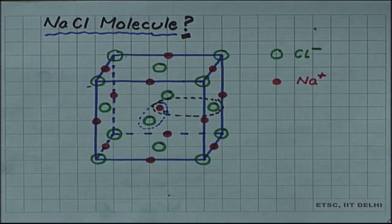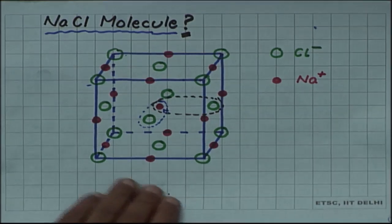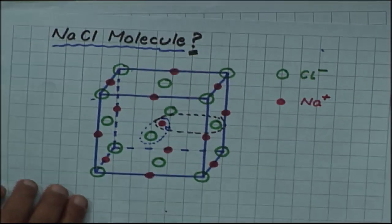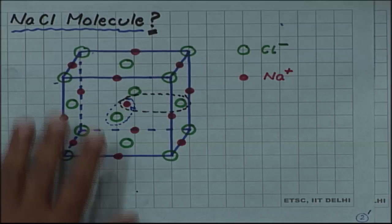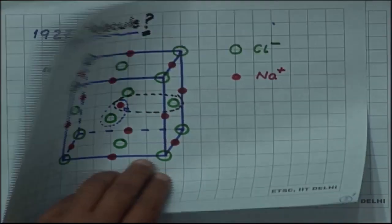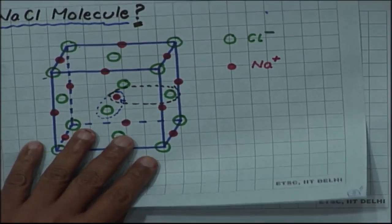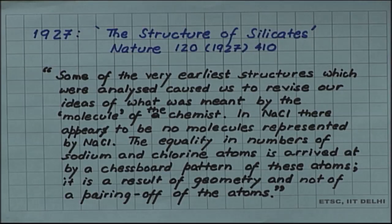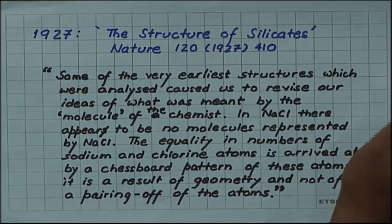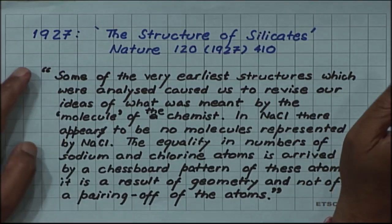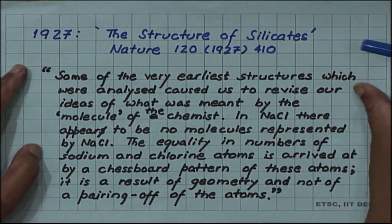Let us look at Bragg's comment on this — what did the discoverer and solver of this structure think about it? In 1927, while writing an article on the structure of silicates in Nature, he makes a comment on his earlier solution of sodium chloride.